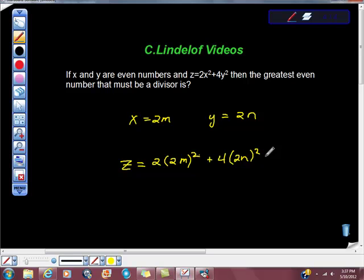Are we in agreement on this? So then we can finish this out and get this this way, and get that if we distribute this to here and here, we get that 8m squared plus 16n squared is equal to z.